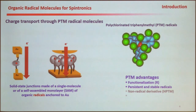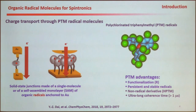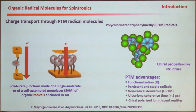These molecules are extremely persistent and stable — you can handle them like any organic molecule. They have an additional interesting property: you can obtain a very similar molecule without spin, like the H-radical. The coherence times have been measured, and this kind of molecule shows very long coherence times of more than one microsecond. Also, because they have a propeller-like conformation, they are intrinsically chiral, and it is possible to separate the two enantiomers and work with them.